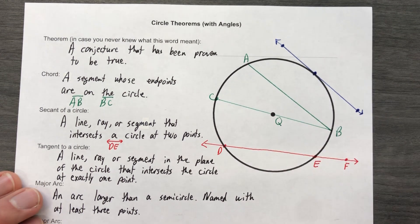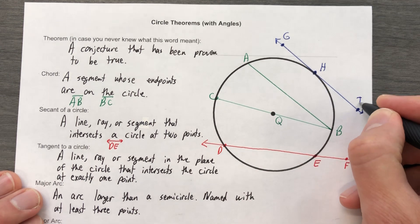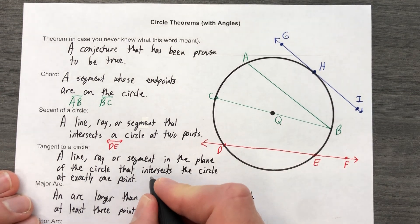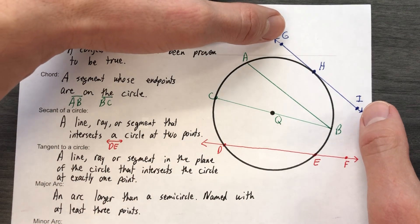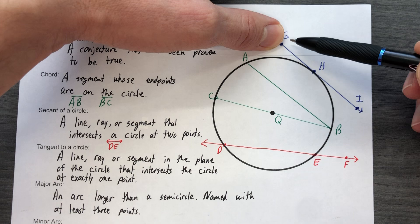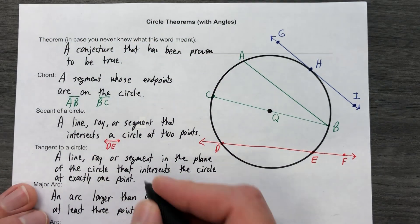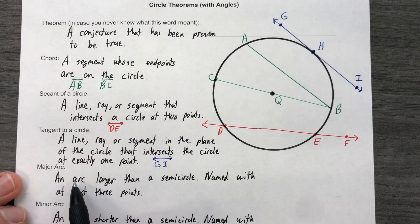And what do we have now? G, H. So I would say that line GI or segment GI, or even the ray from G to I—a ray starts at a point and then goes forever in the other direction—that basically would be a tangent GI. A major arc is an arc longer than a semicircle.